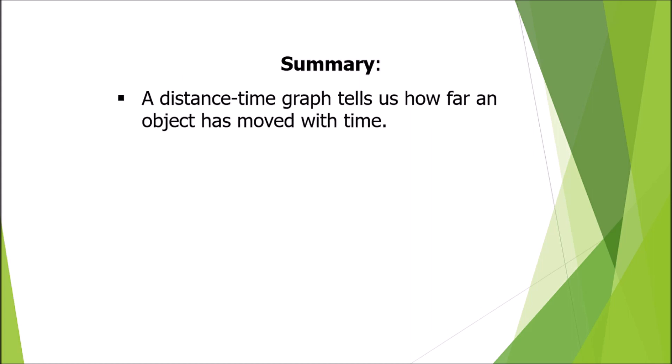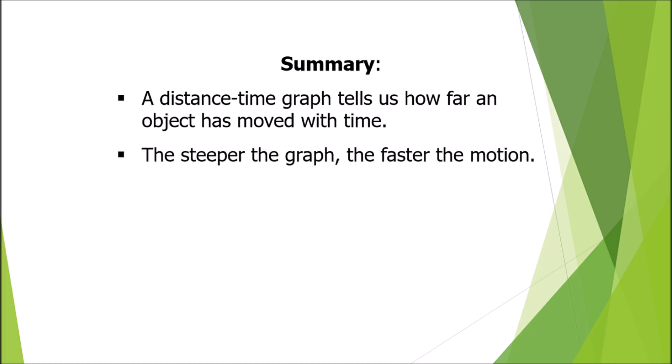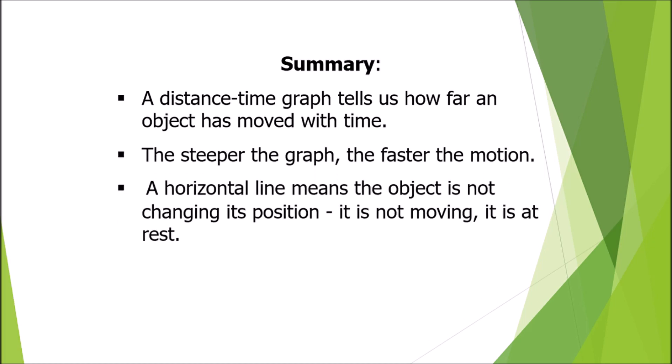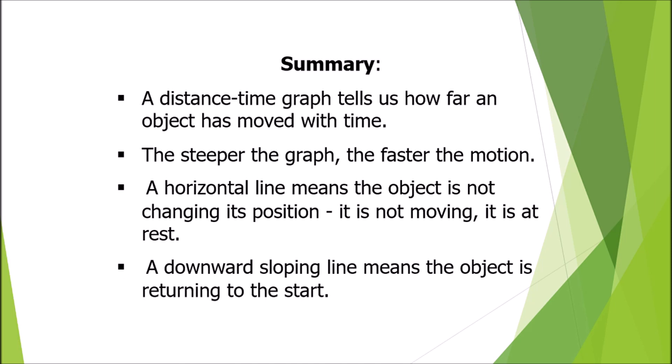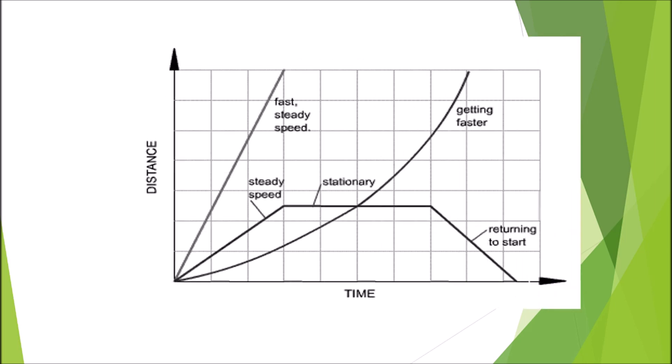Summary of distance-time graphs: a distance-time graph tells us how far an object has moved with time. The steeper the graph, the faster the motion. A horizontal line means the object is not changing its position — it is at rest. A downward sloping line means the object is returning to the start, and an upward curving slope means the speed is increasing.